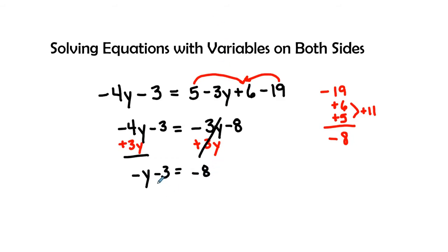Next I'm going to take the negative 3 or get its inverse and add 3 to both sides. Therefore I will have a negative y equal to a negative 5.